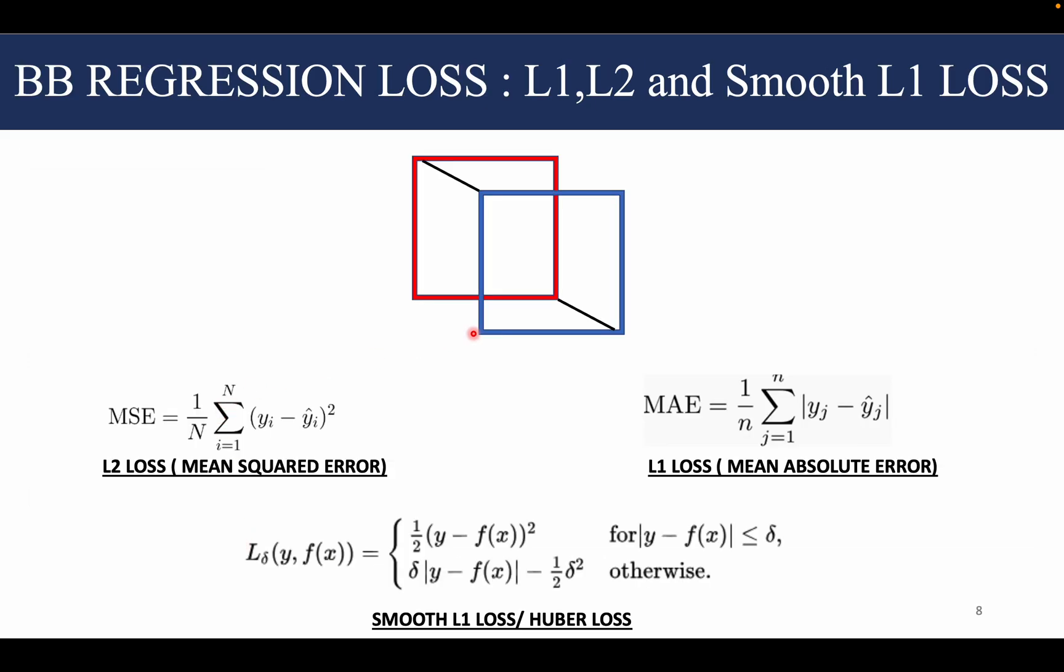So if we want our predicted bounding box to overlap with the ground truth bounding box, we need to minimize this particular distance in case we are using the corner method to specify the bounding box. So how is this done? There is one family of bounding box regression loss called the L1, L2, and smooth L1 loss.